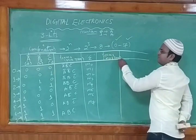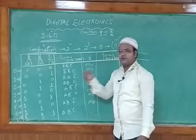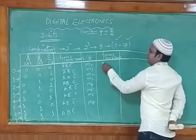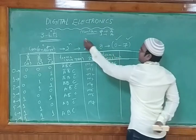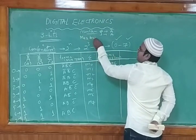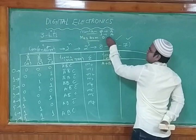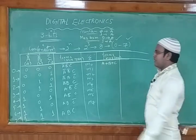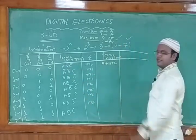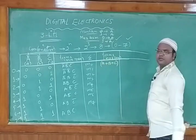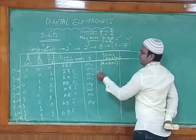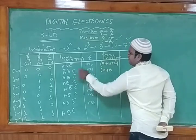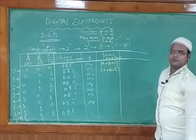In maxterm we write the addition terms — the reverse of minterm. For example, for all zeros we write a+b+c; for the second entry, a is 0 so we write a, b is 0 so we write b, c is 1 so we write c̄. Let us continue writing each maxterm systematically by applying this reversed rule.